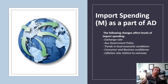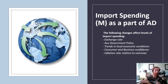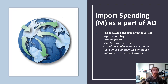Things that affect import spending: the exchange rate — the higher the exchange rate, the more we import. When the Australian dollar was worth $1.10 US, buying from America was much cheaper. Now at about 70 US cents, it costs a lot to import, so people are doing less of it. Australian government policy can impact import spending — you now pay GST on imports above a certain value, which disincentivises importing. Trends in local economic conditions — people are importing less because they're worried about future incomes. Consumer and business confidence and the inflation rate relative to overseas also play a role.